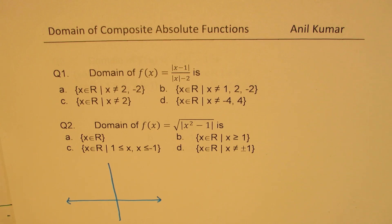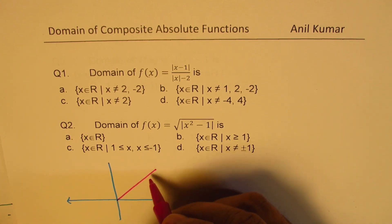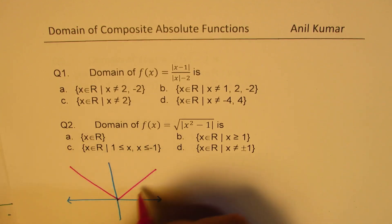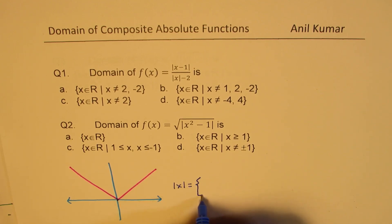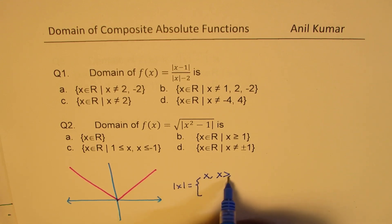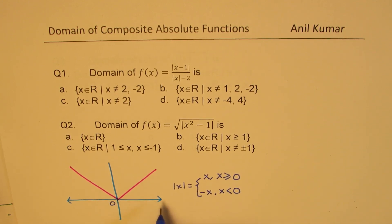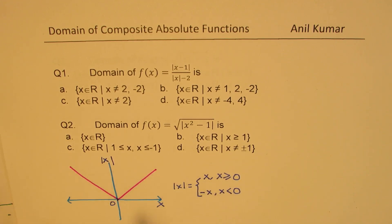The absolute value function is a combination of two linear functions. y = x is one line, but y = -x is reflected. You can always write the absolute value of x as a piecewise function: it equals x when x ≥ 0, and equals -x when x < 0. That is how you sketch the graph of an absolute function.